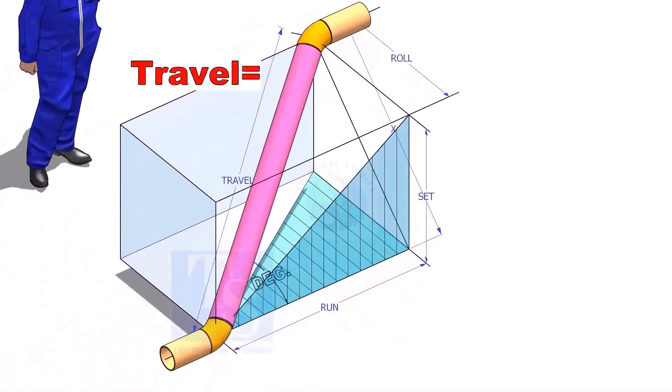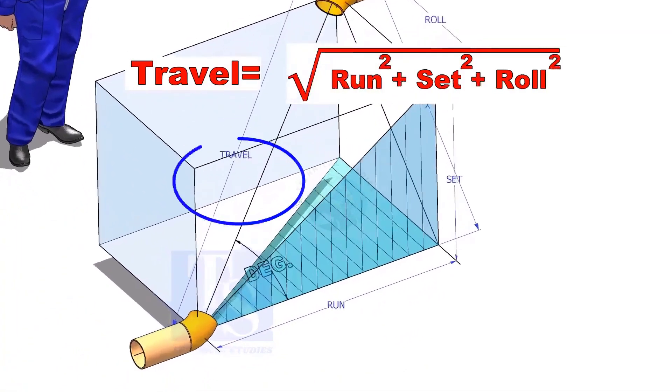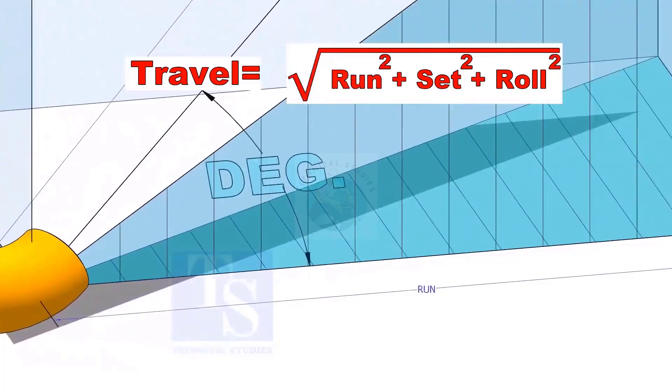The formula to calculate the travel length is root of the sum of the run, set and roll.